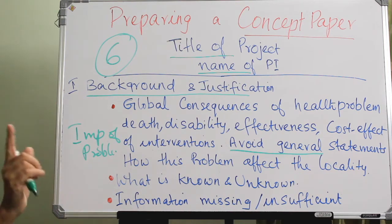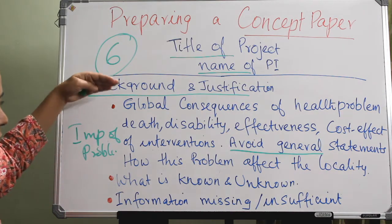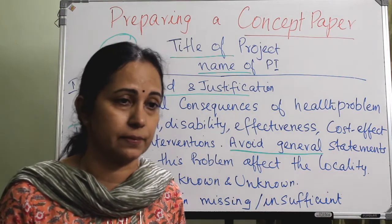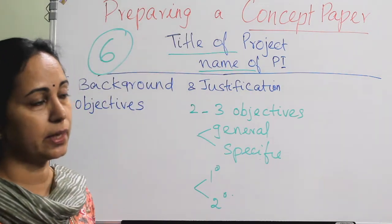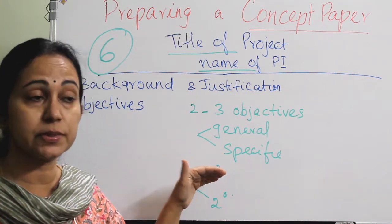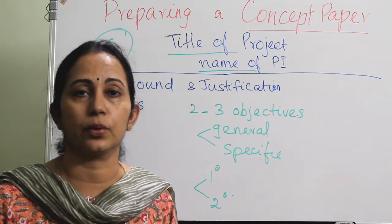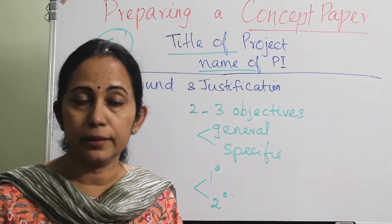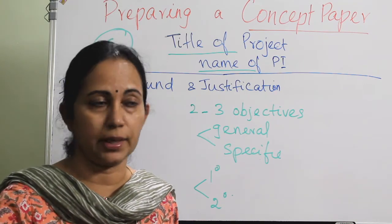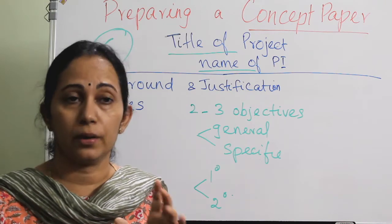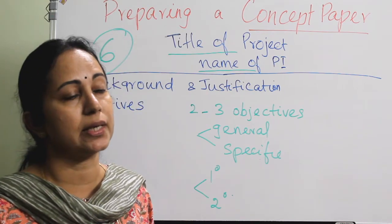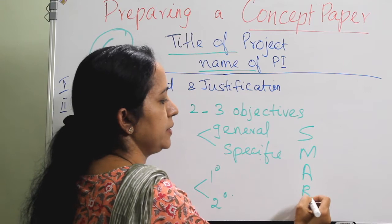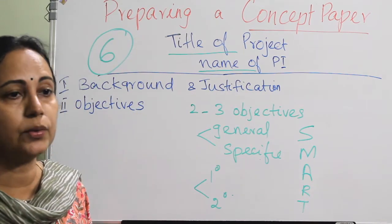Under background and justification, there should be three bullets only — no numbered lists, bullets only: importance of the problem, what is known and unknown, and what information is missing or insufficient. The second section is objectives, where two to three objectives can be listed under general and specific, or as primary and secondary objectives. The primary objective should be connected to the title, the sample size should be connected to the primary objective, and objectives should be SMART — specific, measurable, attainable, relevant, and time-bound.